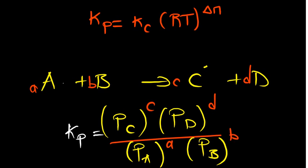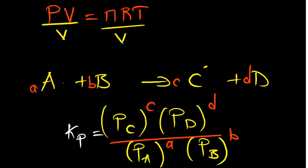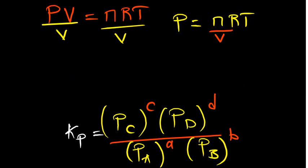We know the ideal gas law, which tells us that pressure multiplied by volume is equivalent to nRT. If we divide both sides by volume, pressure equals nRT divided by V. We can isolate n over V, which is the number of moles divided by the volume — and that is equivalent to molarity, or concentration. So this is the key equation we derive from the ideal gas law: pressure equals concentration times RT.